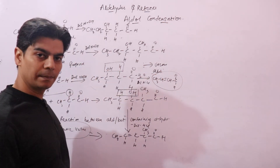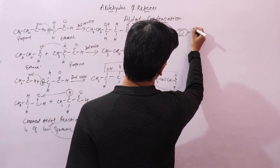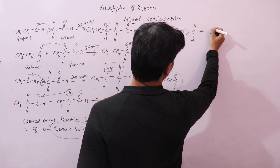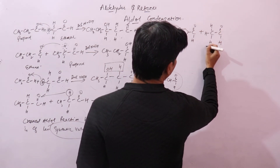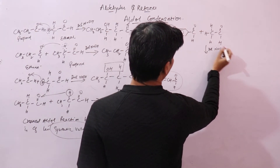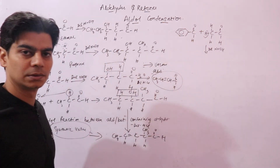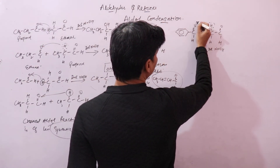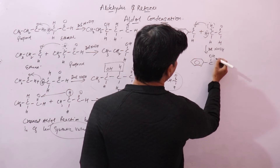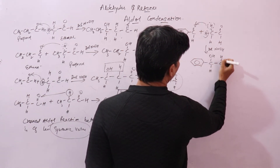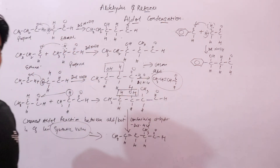Now let's see how we can make this reaction better by reacting benzaldehyde with acetaldehyde. This reaction takes place in presence of dilute sodium hydroxide. Acetaldehyde contains alpha hydrogen, whereas benzaldehyde does not contain alpha hydrogen. The alpha hydrogen from acetaldehyde attacks the carbonyl carbon of benzaldehyde to form a beta-hydroxy aldehyde product.